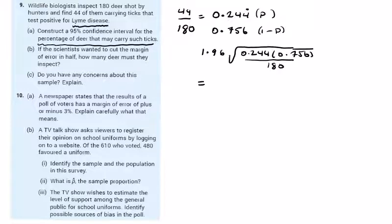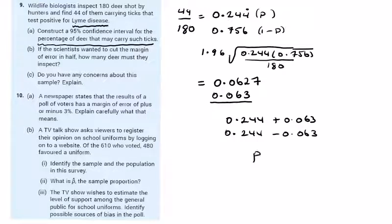And this is going to give me a value of 0.0627, suppose we go 0.063 here. So we were at 0.244, I have to add on 0.063 to get the higher end and 0.244 minus 0.063 to get the lower end. My p values are going to be between 0.307 and 0.181 for my interval.